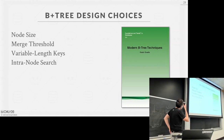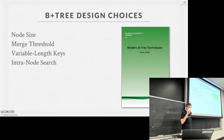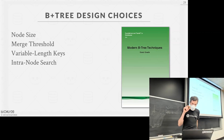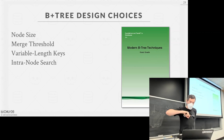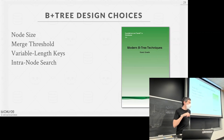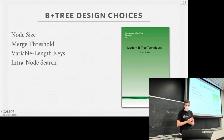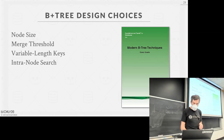Last class we ran out of time talking about B+ trees, so I'll spend a little time covering the things we missed — some optimizations, other design choices — and then we'll jump over to talk about how to do a multi-threaded B+ tree, which you'll need for the second project.